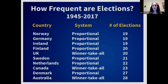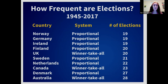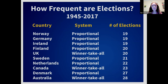Countries with PR don't have the constant election speculation we see with minority governments here, because no party expects to gain a false majority. If you're polling at 35 percent, why call an early election to get 37 percent and the same number of seats — while angering voters for wasting everyone's time? In PR countries, the incentive is to cooperate, while in winner-take-all systems, the incentive is to pull the plug as soon as you think you can govern alone.